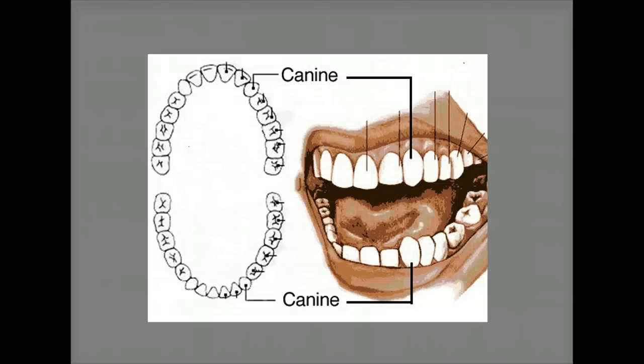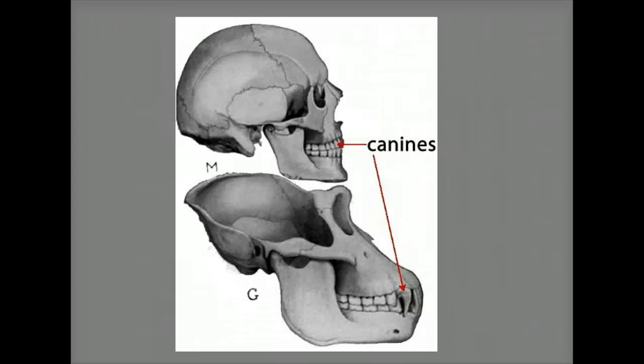Primates, being mammals, also have canine teeth in both the upper and lower jaws. The size of these canines are quite different in different primate species. If we compare humans and gorillas, we see that the canines are quite prominent in gorillas, but they are barely noticeable in humans. You might even want to suggest a hypothesis as to why this might be.